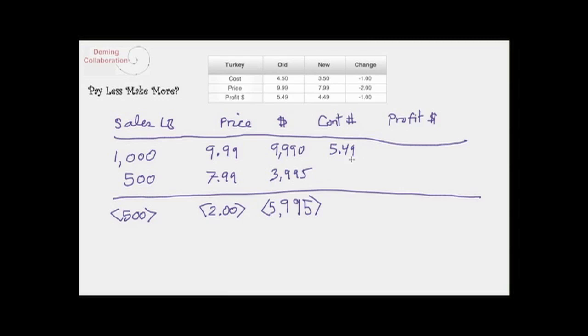The contribution per pound of profit was $5.49 a pound originally. It dropped to $4.49 a pound, or a dollar less.